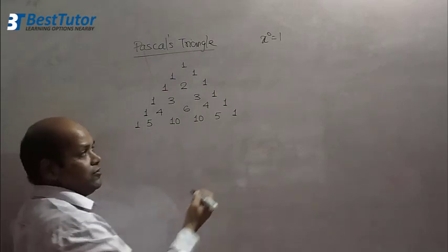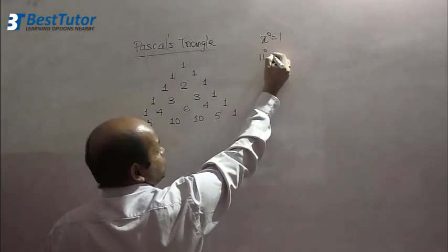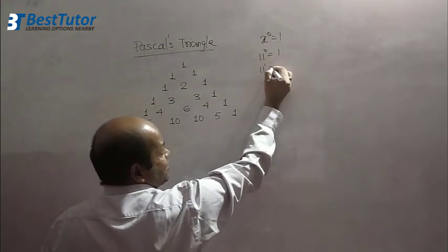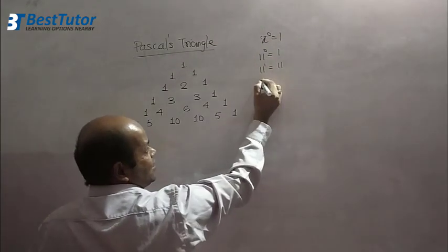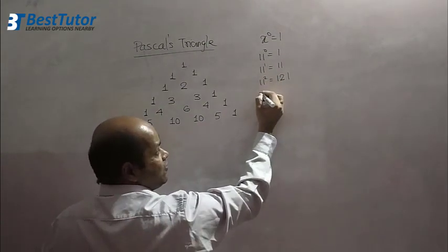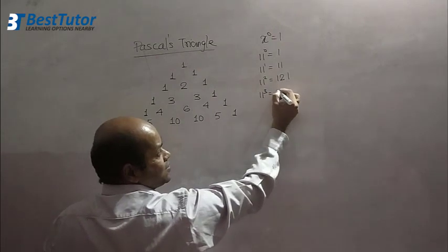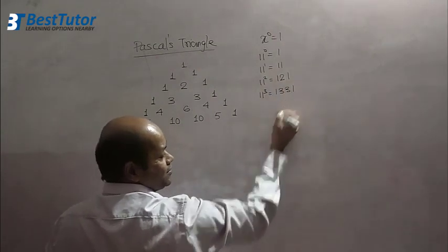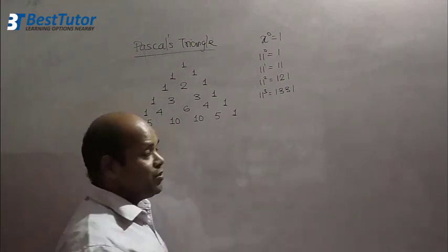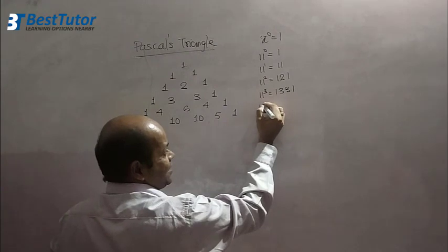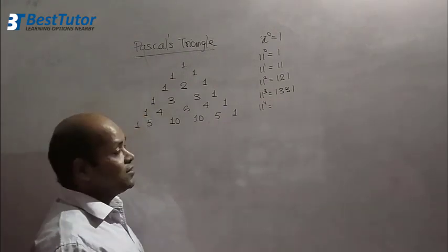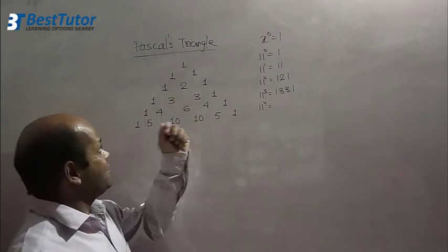So the same concept goes if I talk about powers of 11. We talk about 11 to the power 0 is 1. 11 raised to 1 is 11. 11 square is 121. 11 cube is 1331. 11 raised to 4 and 11 raised to 5, you don't know. You don't have to remember. But 11 raised to 4 is easy to remember. Pascal's Triangle helps us.